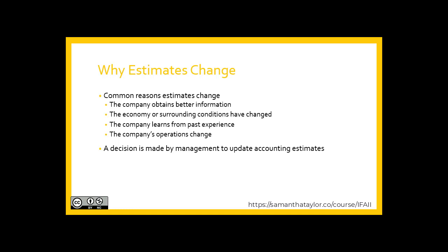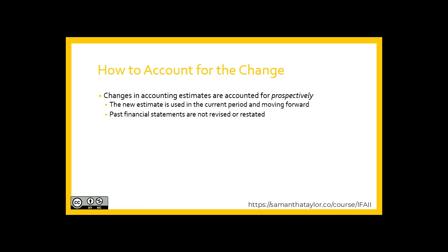A decision is made by management to update accounting estimates. So how do we account for changes when we realize they resulted from a change in estimates? We record all of these changes prospectively, which means that past financial statements are not revised or restated. The new estimate is used in the current period and moving forward. Changes in accounting estimates are accounted for prospectively.